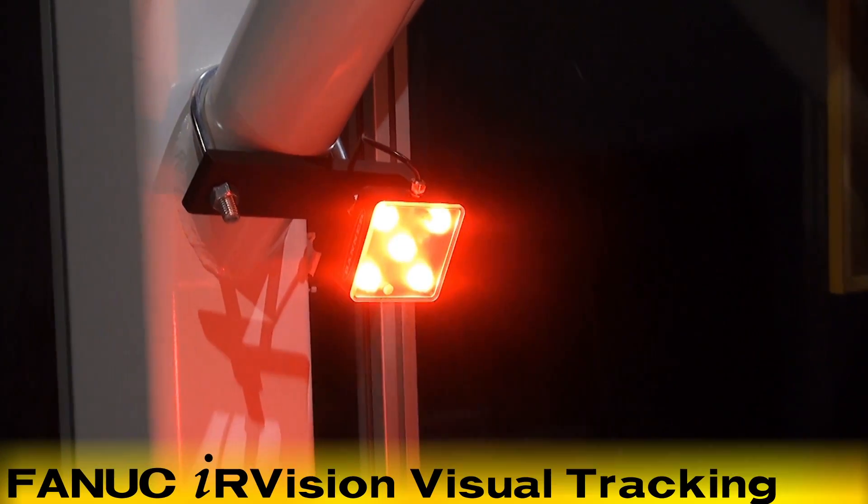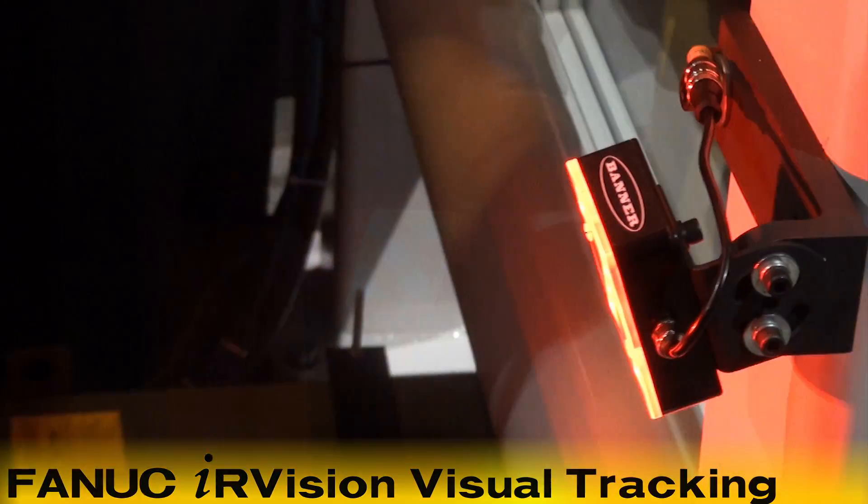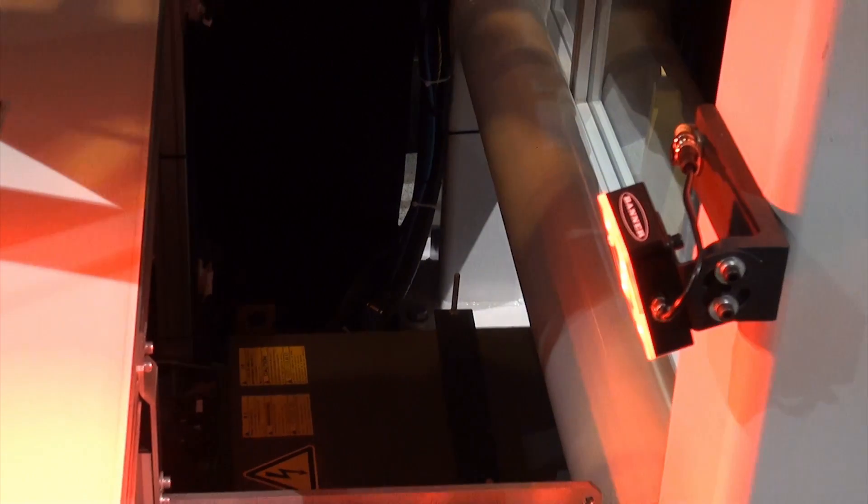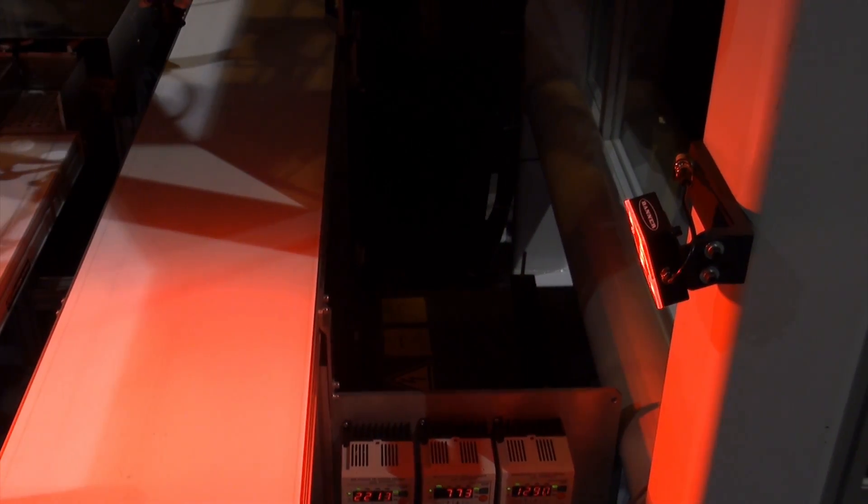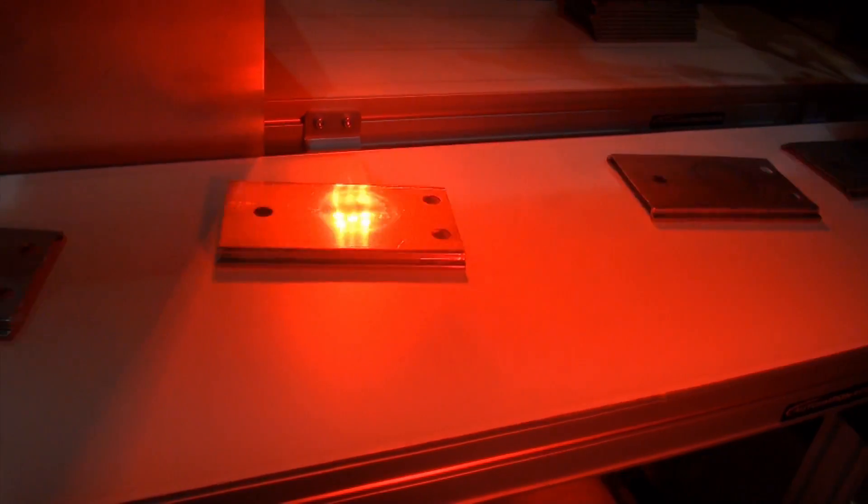This robot is equipped with FANUC IR Vision Visual Tracking. FANUC IR Vision Visual Tracking plays a major role in this robot's speed and accuracy and provides the robot with the ability to pick products from the moving conveyor.